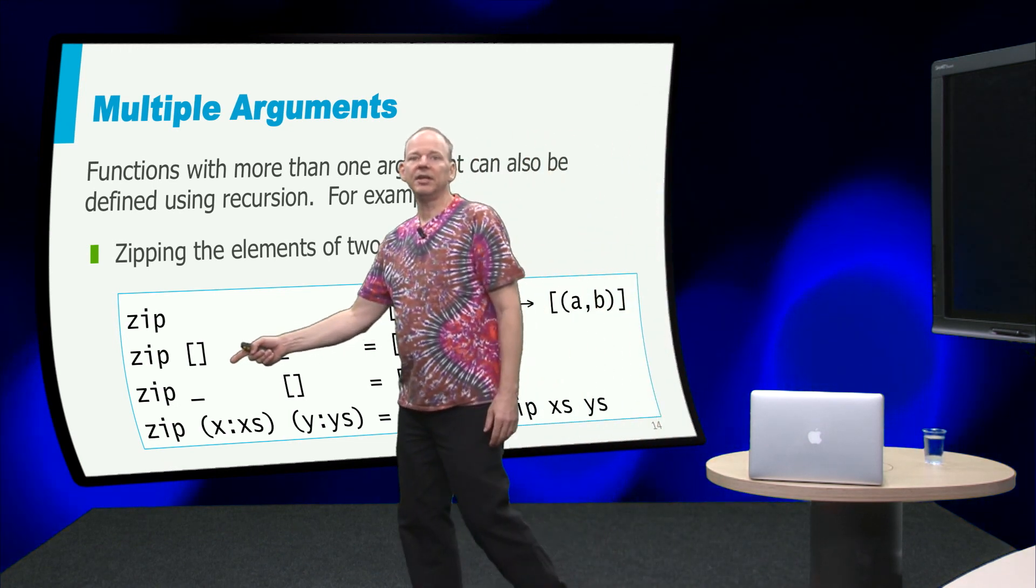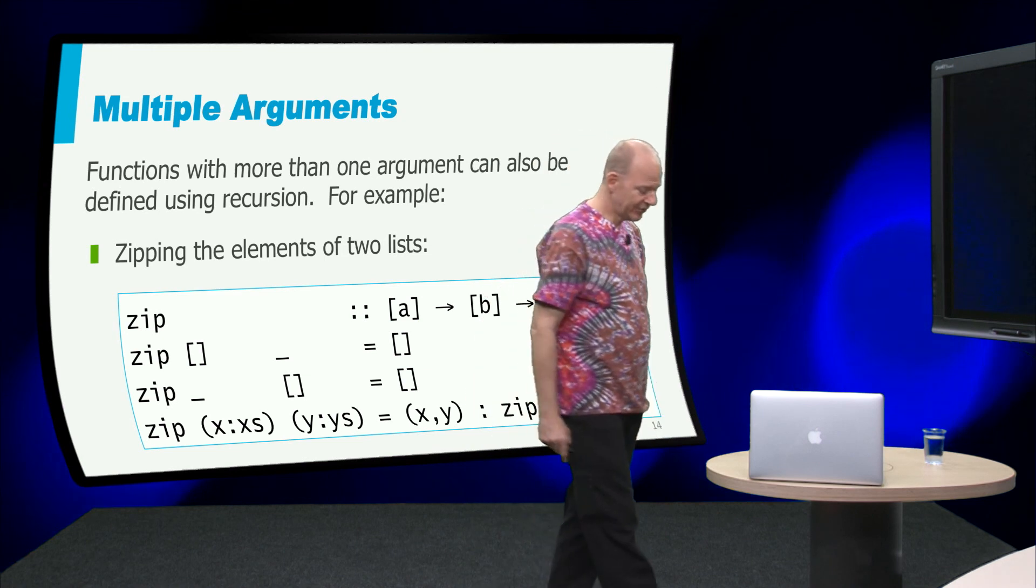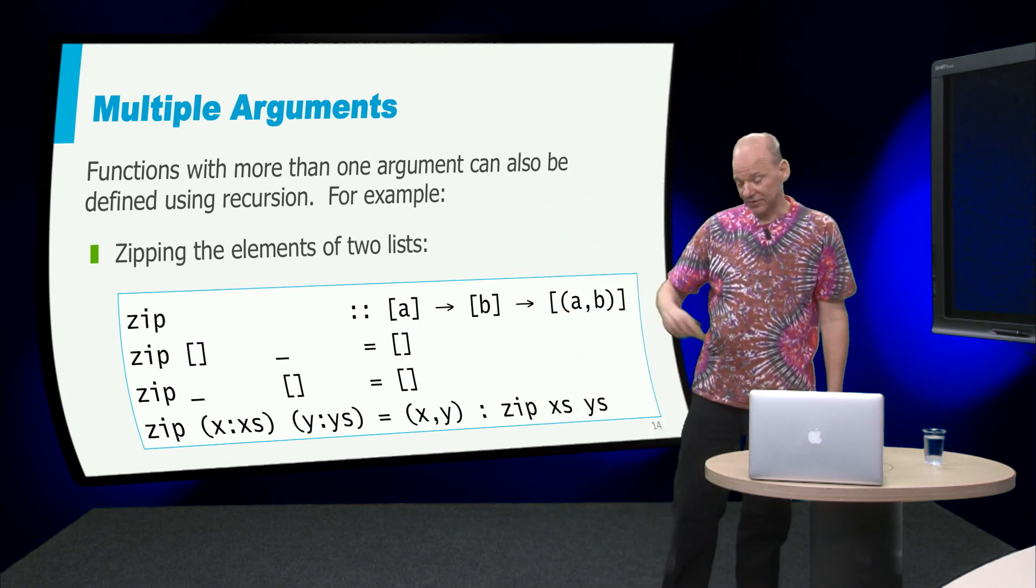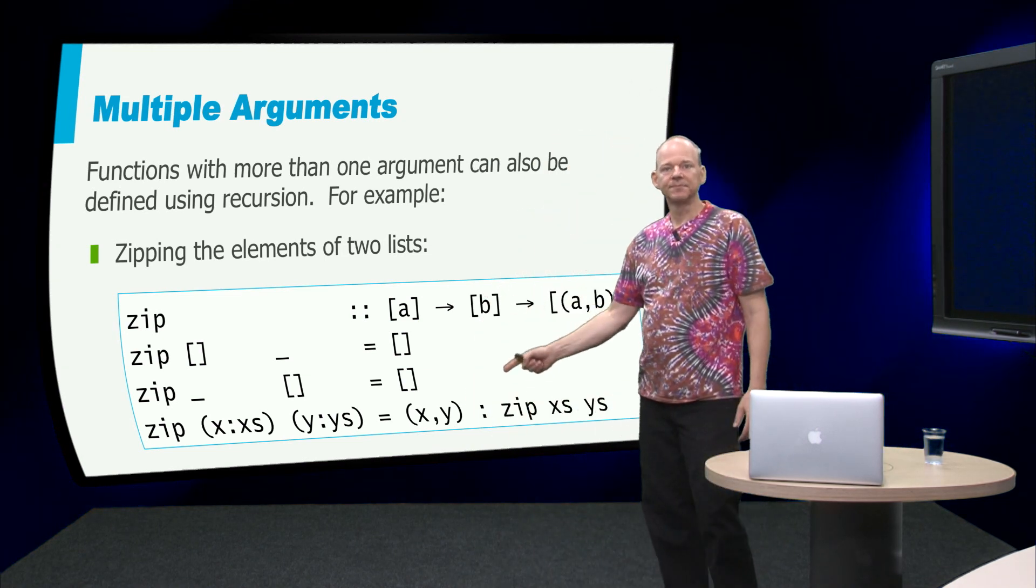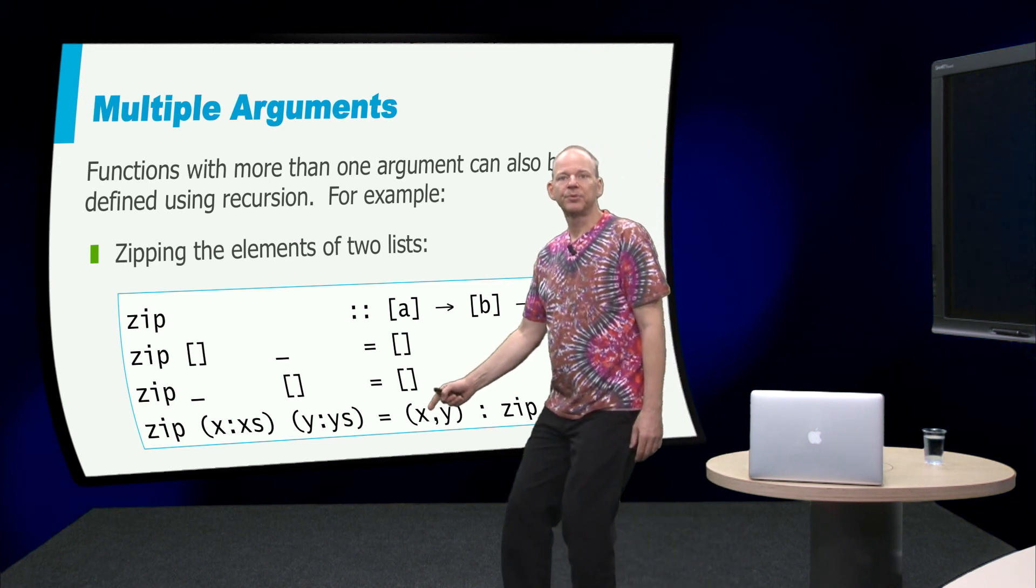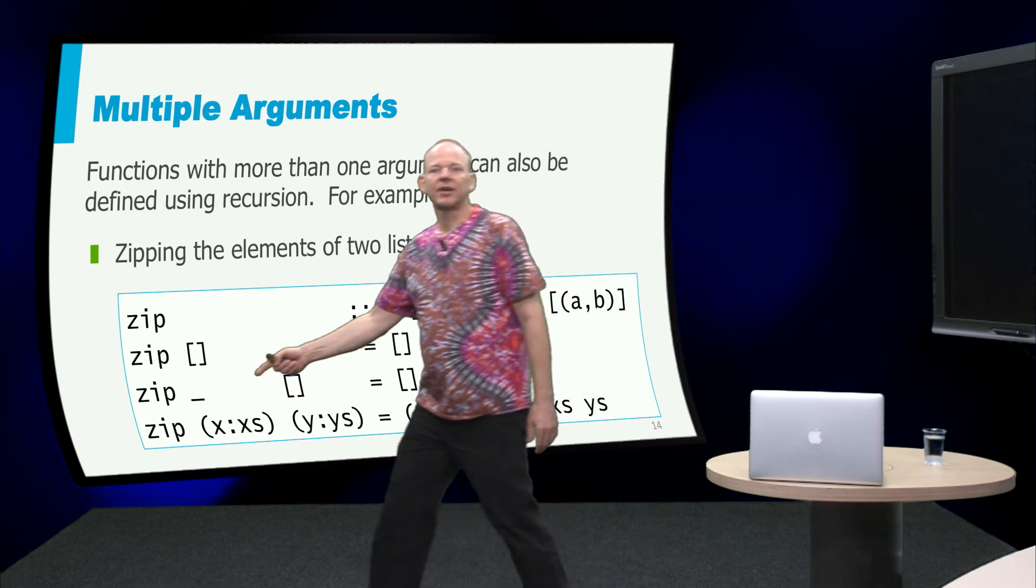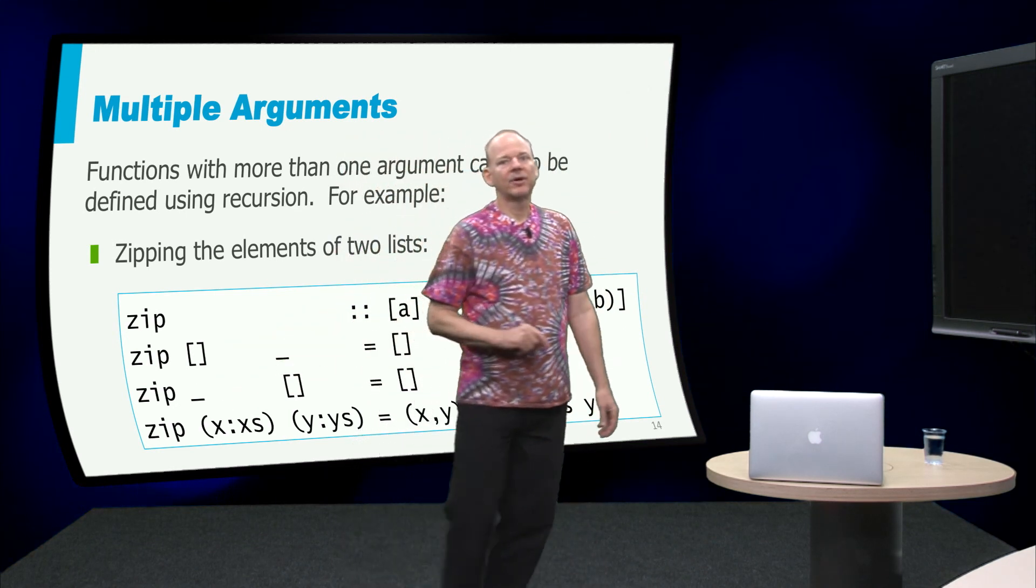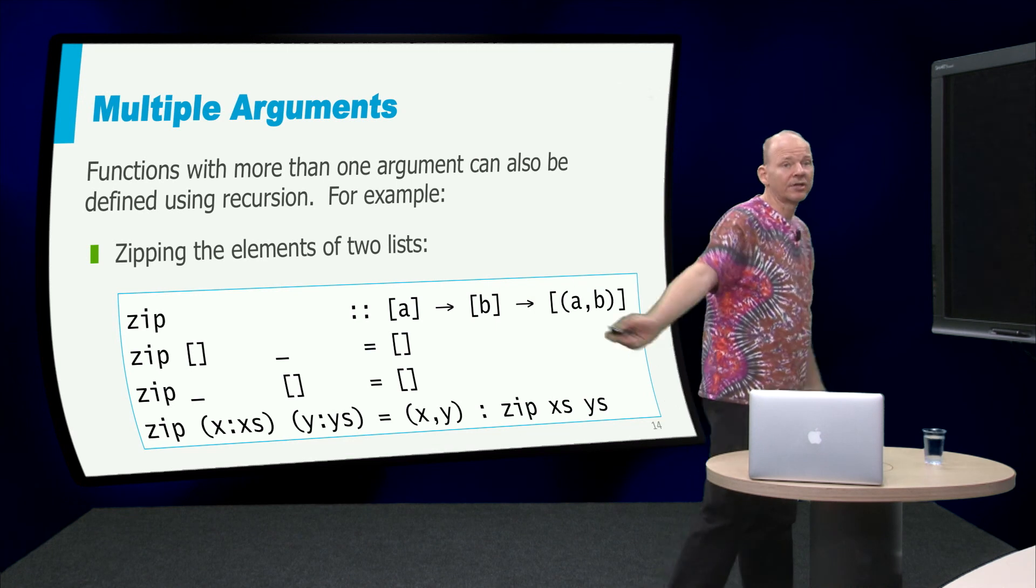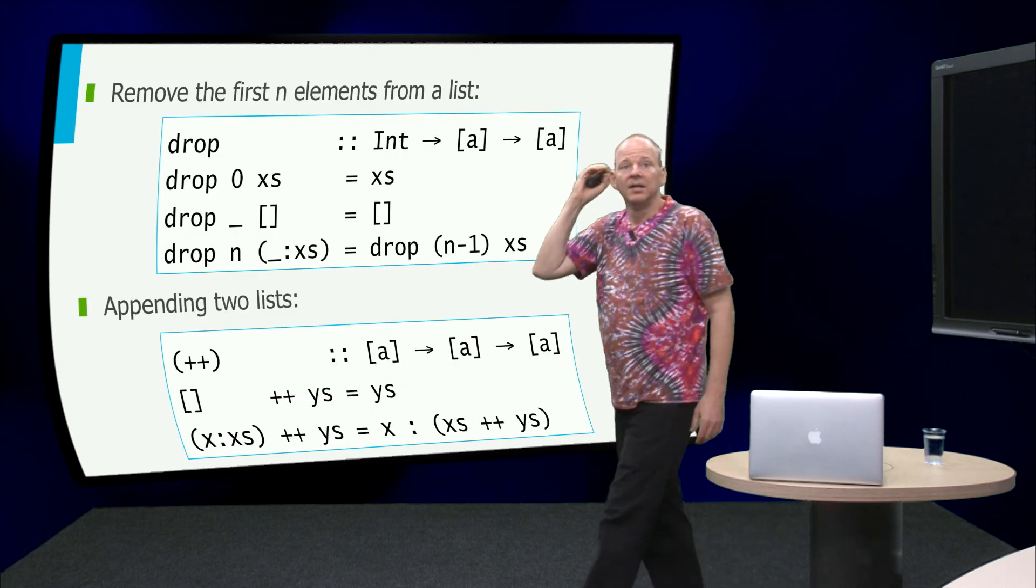Now when do we stop? Well we stop when either of the two lists is exhausted, in which case we return the empty list. Ok, and of course we have to put these cases first here, because there is a wildcard pattern here, that would otherwise not work.